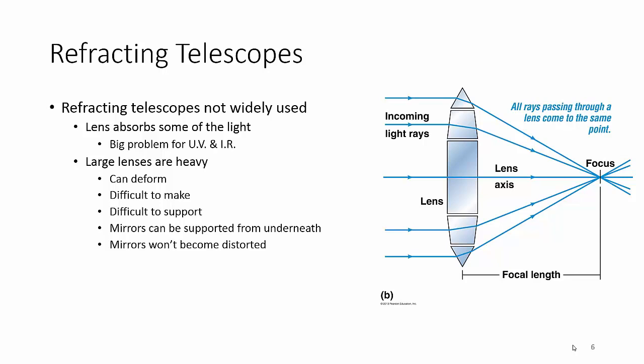You can only support it on the ends. You can't put a back on it because then the light won't be able to go through. Whereas mirrors you can support it and mirrors won't become distorted. Also there's two surfaces you have to take care of—polish both sides, make sure they're completely dust-free, completely streak-free, completely clean. One surface is bad enough.